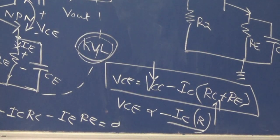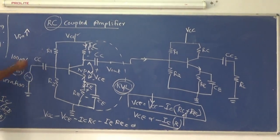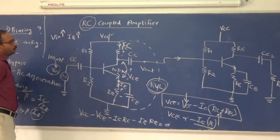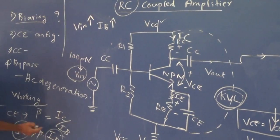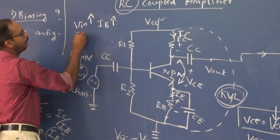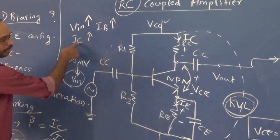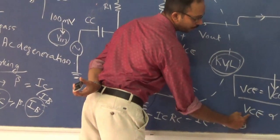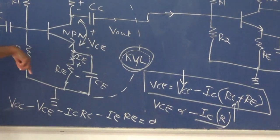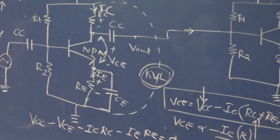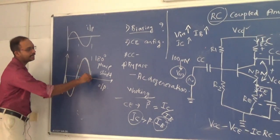When the input voltage increases, the input current IB also increases. Since IC = beta × IB, when IB increases, IC also increases. When IC increases, according to our equation, VCE also increases but in the negative direction — it is inverted. That is the reason why we get an amplified output signal with a 180-degree phase shift.